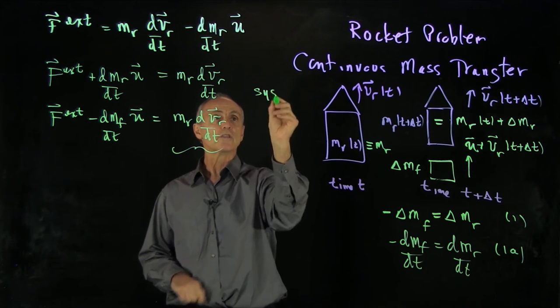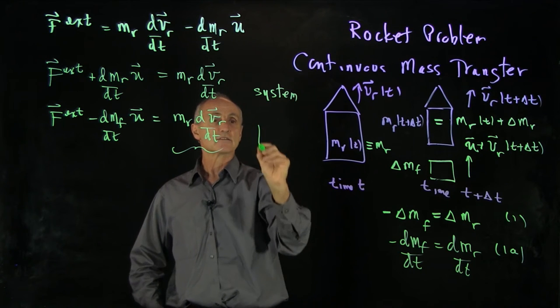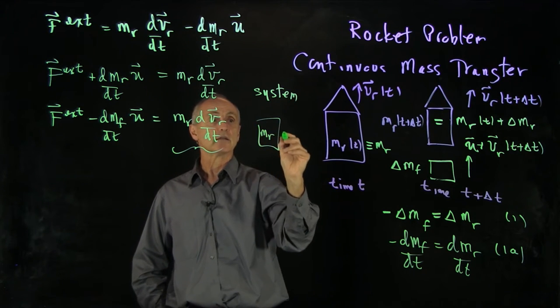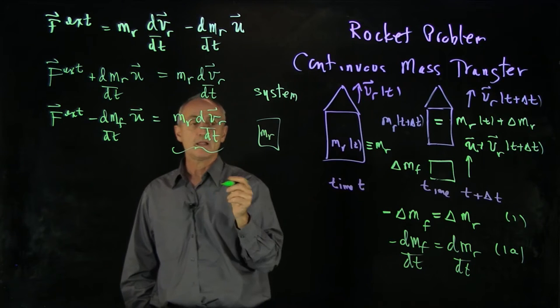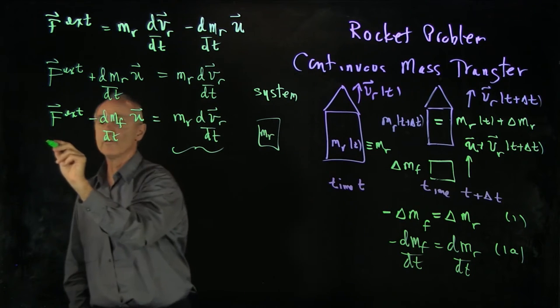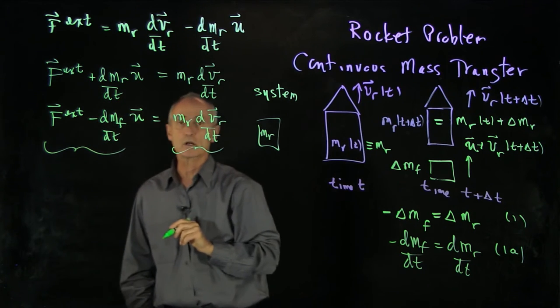So if we just rethought our system as simply the rocket, mr, then we have two forces acting on the rocket.